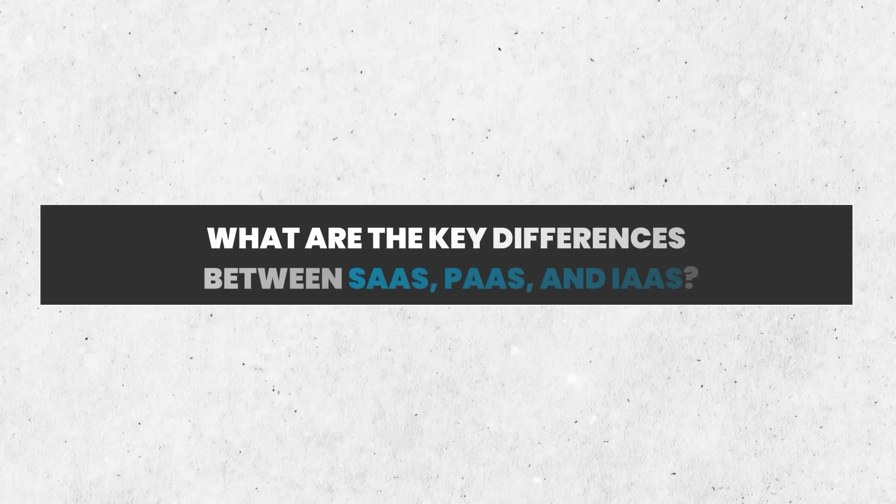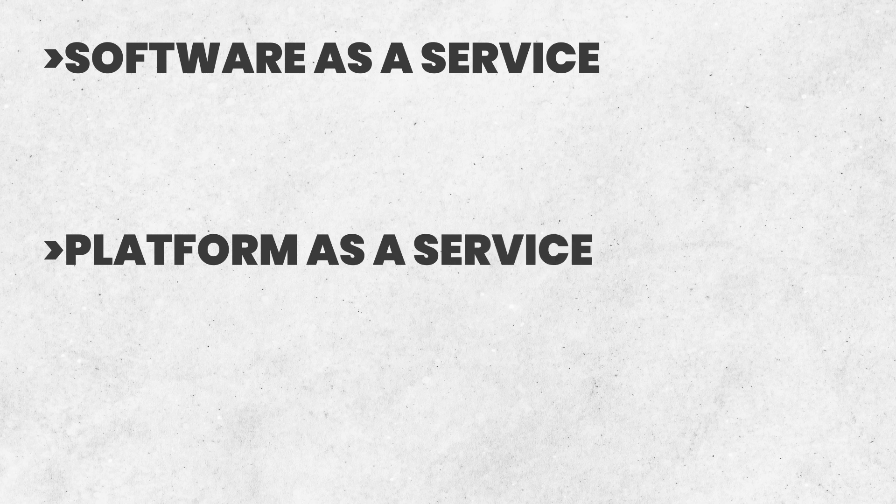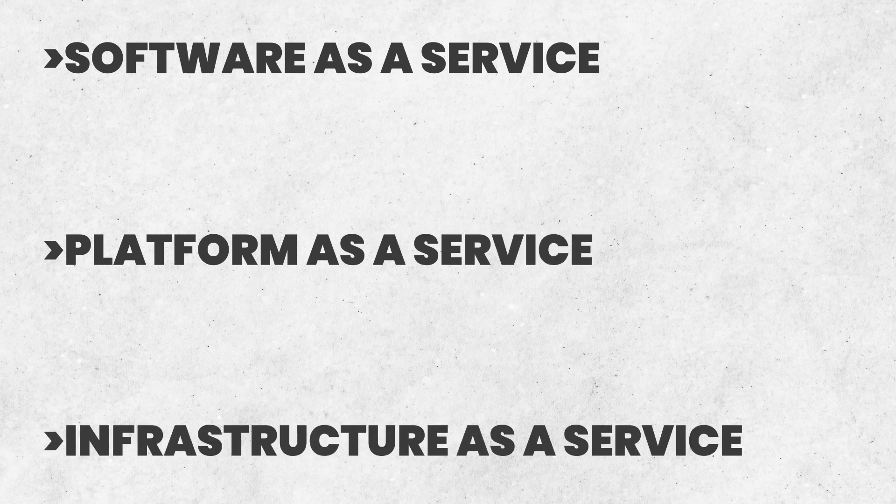Next, let's explore the various service models of Azure — what is the difference between IaaS, PaaS, and SaaS? In Azure, we have three primary service models: first, Software as a Service; second, Platform as a Service; and third, Infrastructure as a Service.